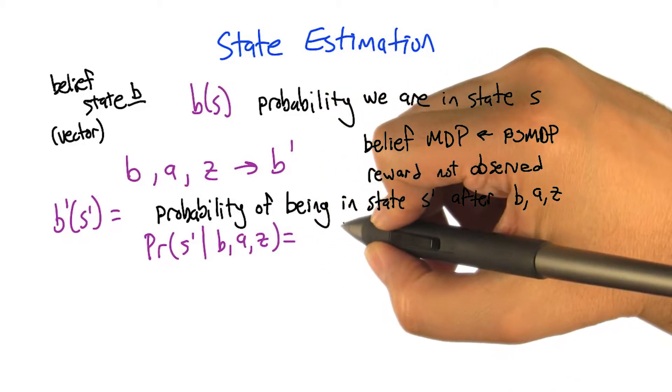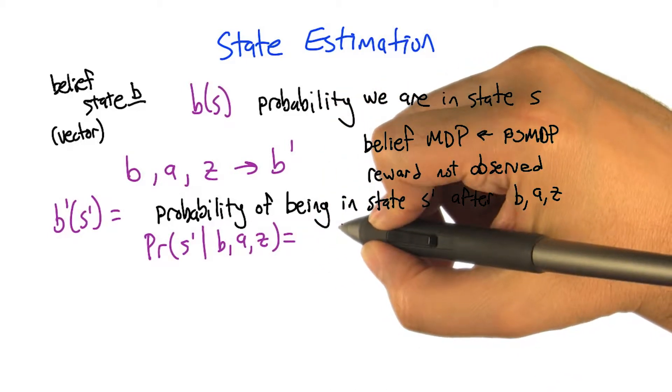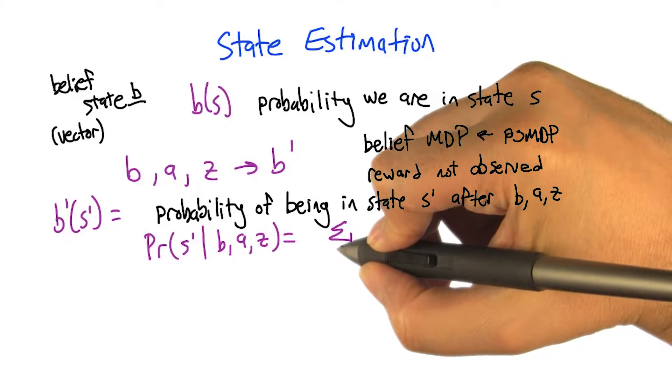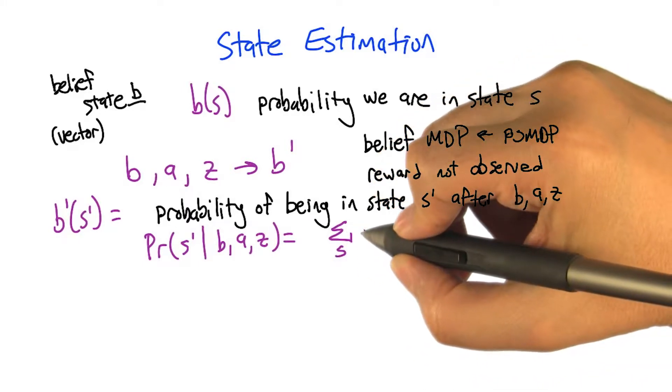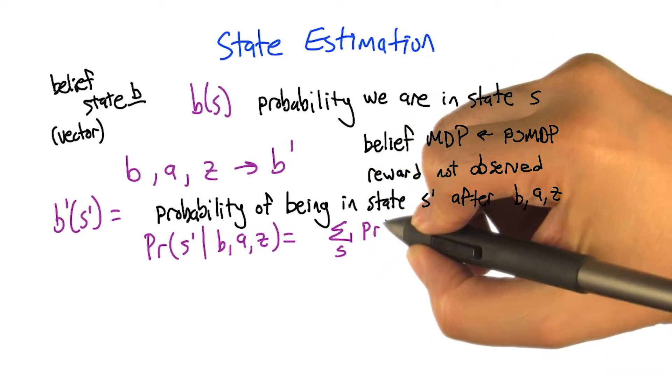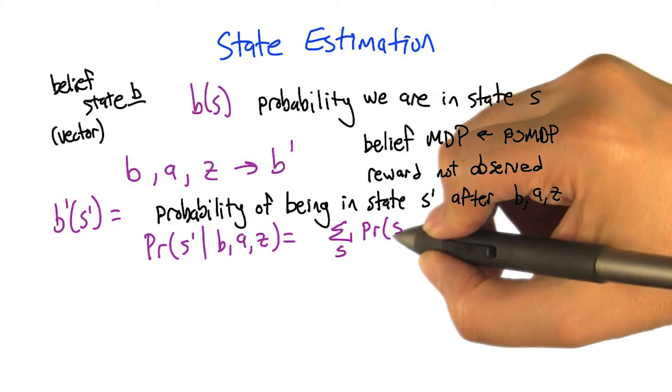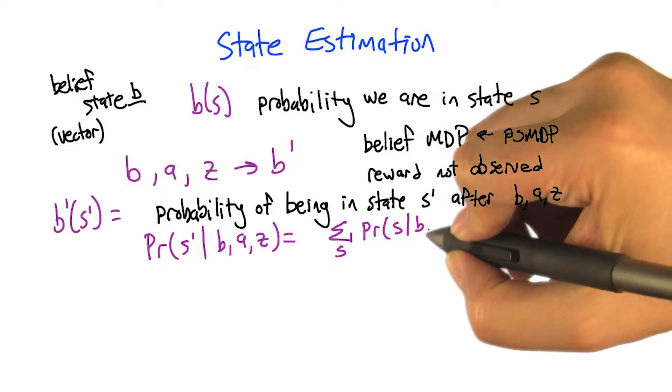Let's just write that. That's a really good start. So what we're saying is, let's break things down by the possible state that we started in, and what we want to know, and we're going to weight things by, well, what's the probability that that's the state we started in? Given B-A-Z.